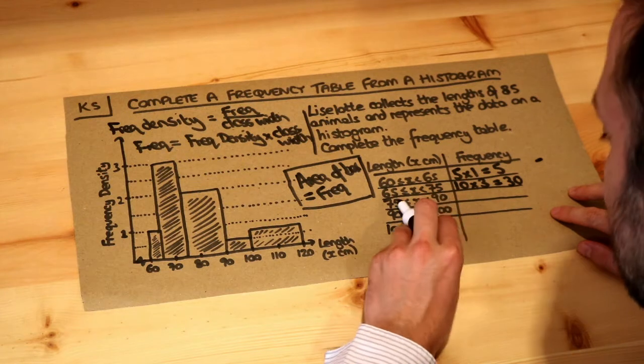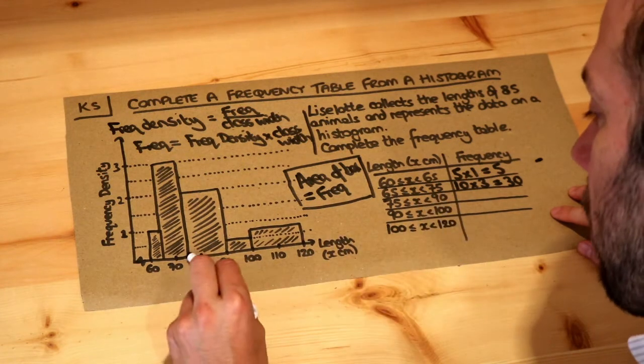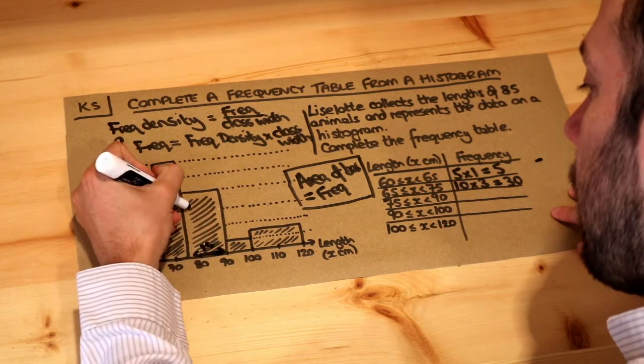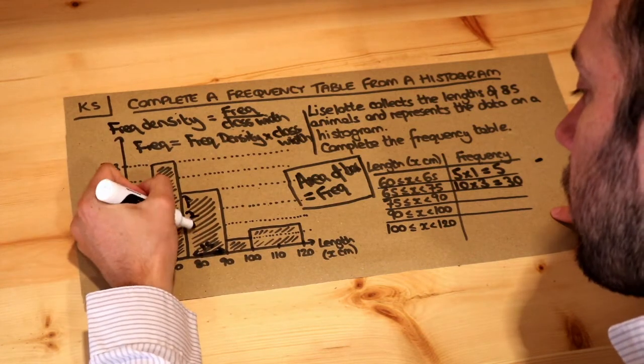What about the next one? 75 to 90, that's a width of 15. The height of the bar we can see is 2, so the area of the bar is 15 times 2, which equals 30 again.